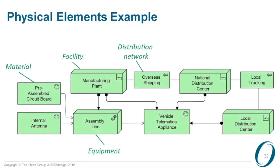To show a simple example: a manufacturing plant with an assembly line inside that assembles vehicle telematics appliances from two kinds of material — pre-assembled circuit boards and internal antennas. Those are put together to create the appliance, which is then distributed by local and national distribution centers via a distribution network — overseas shipping is one, local trucking is the other. These are the new concepts added. There's no behavior in this picture; as mentioned, no new behavior concepts were added, so you can still model the assembly process as the behavior of the assembly line using the existing technology behavior.